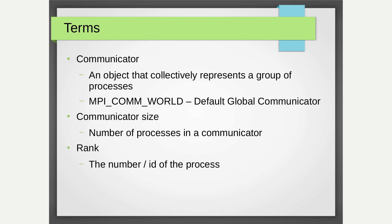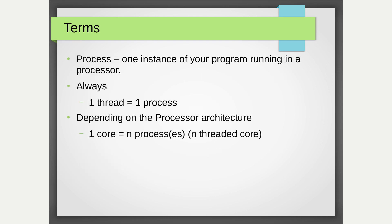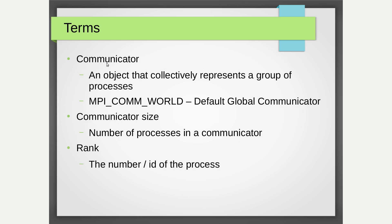Up to here is all hardware-side information. On the software side, the other terms you need to keep in mind when writing MPI programs are communicator, communicator size, and rank. A communicator is an object that collectively represents a group of processes. The default communicator in MPI is MPI_COMM_WORLD, which is the global communicator. Communicator size is the number of processes running under MPI_COMM_WORLD, and rank is the process number or ID of a given process.